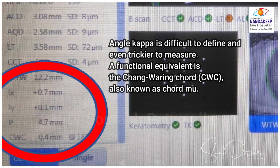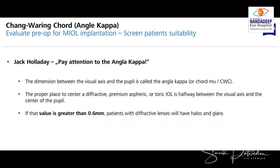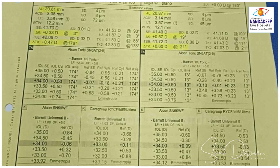If I am considering clear lens extraction, one thing I have to look for is angle kappa, given by the Chang-Waring chord also known as chord mu. Here it is 0.4, which is less than 0.6, so it is okay. But the angle alpha — IX plus IY, which is 0.7 plus 0.1 equaling 0.8 — is higher than 0.6. Whether we should be worried about high angle alpha or kappa is debatable. Most recommendations suggest less than 0.6 is ideal, but in patients with high refractive errors, even if there is high angle alpha or kappa, they accept the slightly higher aberrations because we are correcting their very high refractive error and giving them much better spectacle-free vision. So it depends on your discussion with the patient.